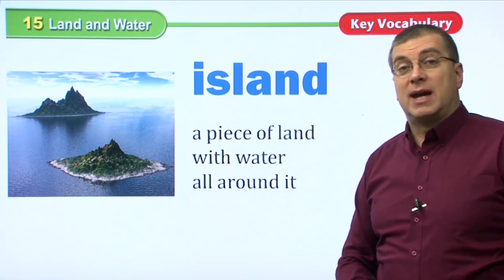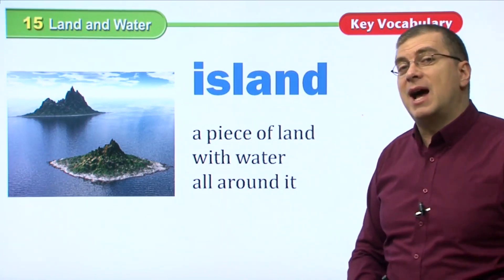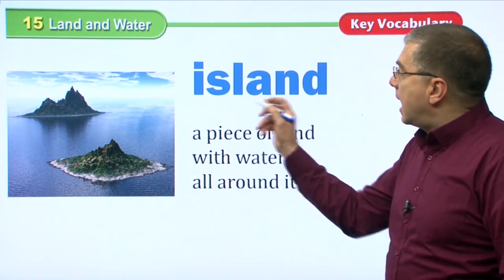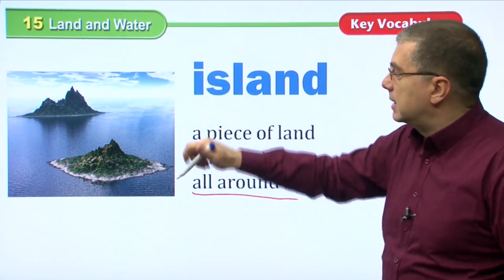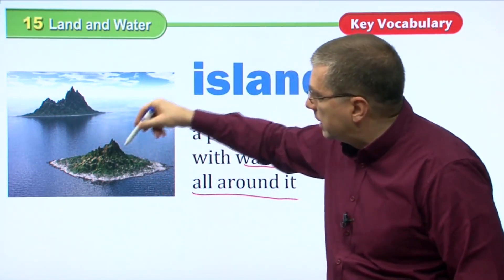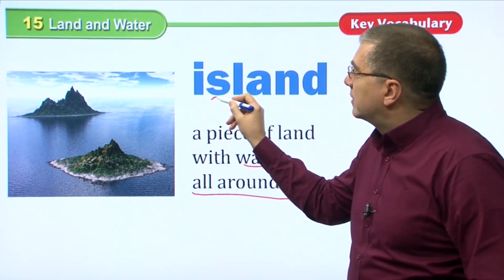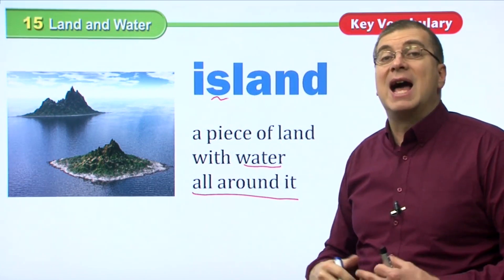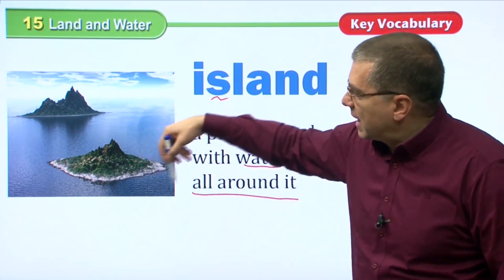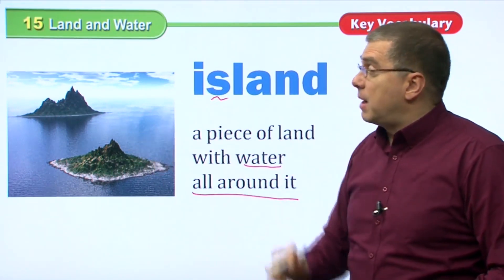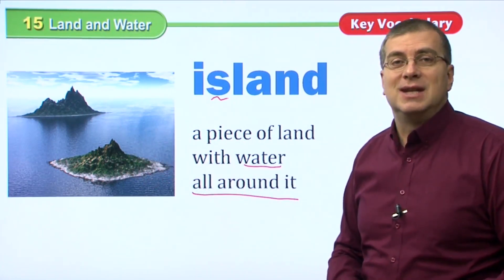We also have an interesting type of land called an island. In the ocean you can find islands, and sometimes also in very big lakes. An island is just a piece of land with water all around it. By the way, we don't pronounce the S in island — it's just 'island,' not 'is-land.' Some islands are very beautiful, especially in the Pacific Ocean, with nice beaches.